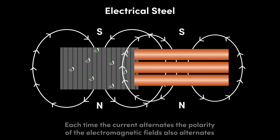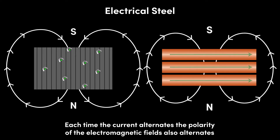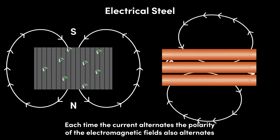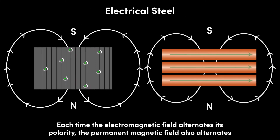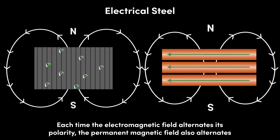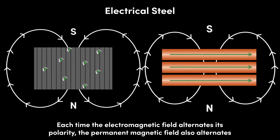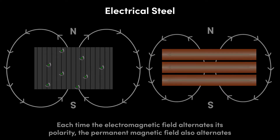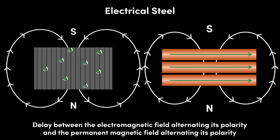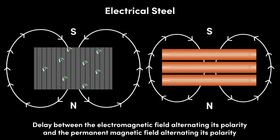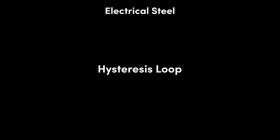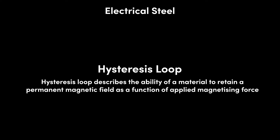Remember, the current in the copper winding is an alternating current. Each time the current alternates its direction, the polarity of the electromagnetic field of the copper winding also alternates. Each time the electromagnetic field alternates its polarity, the permanent magnetic field of the iron core also alternates its polarity to maintain alignment and reinforcement. However, this does not happen instantaneously. In reality, there is a delay between the electromagnetic field of the copper winding alternating its polarity and the permanent magnetic field of the iron core alternating its polarity. This delay is characterized by something called the hysteresis loop.